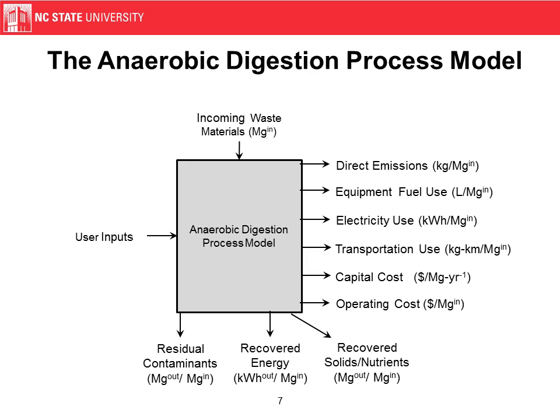From a process modeling point of view, we have user inputs that define the anaerobic digestion process model. The incoming waste materials are run through that process model and we get three main products coming out: the contaminants, recovered energy, and recovered solids and nutrients. At the same time we have direct emissions calculated, fuel, electricity, transportation use, and costs — all coming out of the model and fed into the larger SWOLF system.